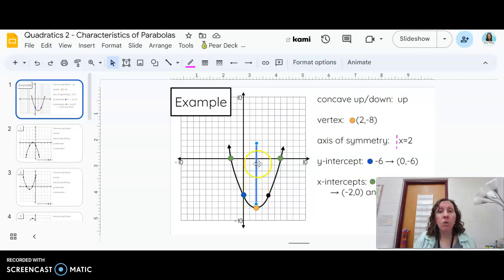So no matter where I go along this axis, the x coordinate is always two. So it's always a straight line up and down.